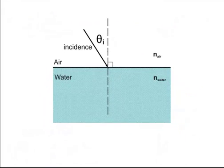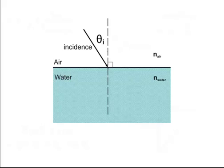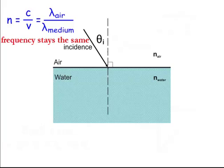This is a Snell's Law type problem, where we have different indices of refraction. That n number has an equation on your equation sheet: n equals c, the speed of light, over v, the velocity of light inside that medium. That n number is always greater than 1, since the n of air is about 1. Not on your equation sheet but very useful: the wavelength in air or vacuum over the wavelength in the medium also equals n, and that can save a lot of time on the AP exam.